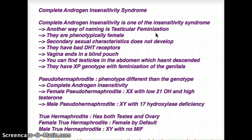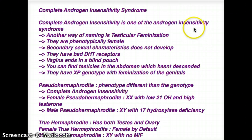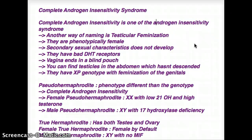In complete androgen insensitivity syndrome, it's actually one of the androgen insensitivity syndromes. The difference between androgen insensitivity syndrome and complete androgen insensitivity syndrome is quite obvious. In complete androgen insensitivity syndrome, there is no sensitivity to the androgens. It falls under the umbrella group because there are other cases where there is partial androgen insensitivity. Another name for CAIS is testicular feminization. Phenotypically these individuals are female, but their genotype is going to be male. Secondary sexual characteristics of a male will not develop.